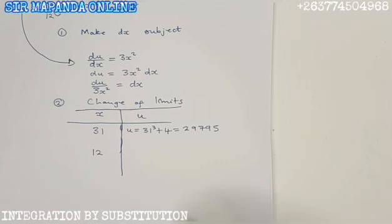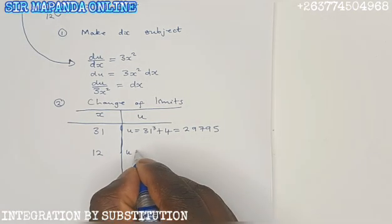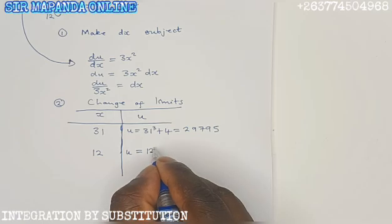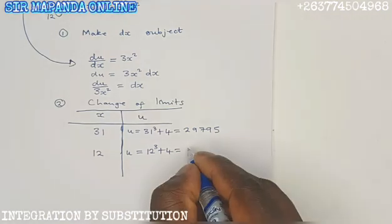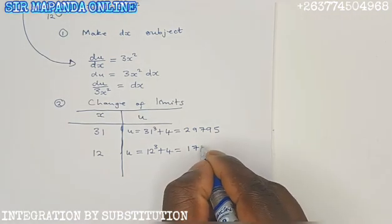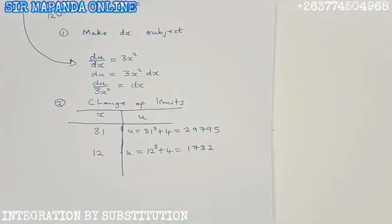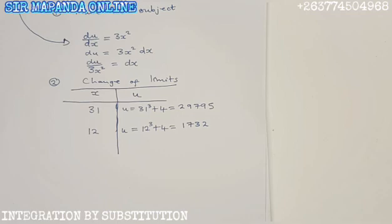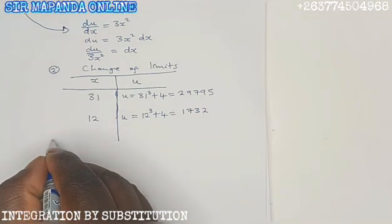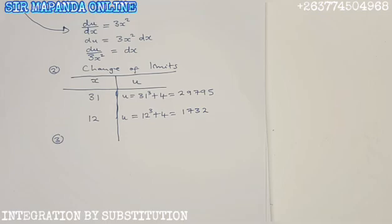I hope you are following class. Now, placing 12 on x, you get u equals 12 cubed plus 4. 12 cubed plus 4 equals 1732. Now that we are through with the change of limits, we move on to the third stage, which is the substitution itself.